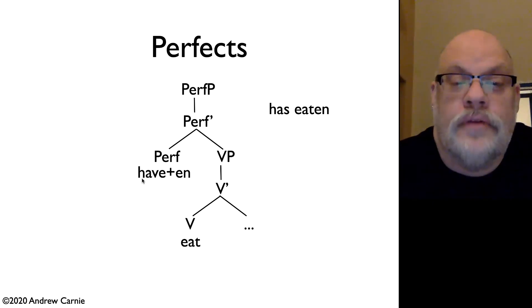So this is our aspectual marker. It's the auxiliary have plus the marker of the participle. But again, the participle marker is in the wrong place. It really belongs down onto the verb. So we can solve that problem by using affix hopping again. We're going to take that -en, and we're going to move it down and hop it onto the verb below it.